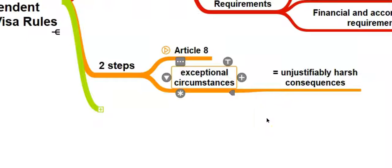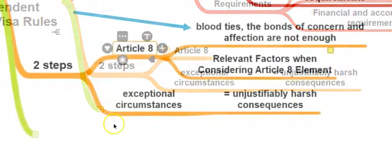It is really important to understand that the Home Office usually refuses to accept that the family life elements of Article 8 exist between adults and family members, unless, of course, they are partners. In other words, blood ties — the bonds of concern and affection that ordinarily go with them — are by themselves or together not enough to prove the existence of family life for the purposes of Article 8. Therefore, to establish the family life element and the existence of family life between two adults who are not partners, you will need to show something significantly stronger than normal emotional ties.